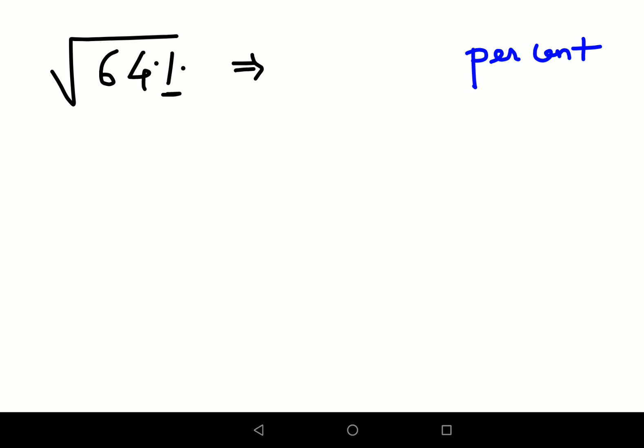So what we will do is we will write this 64% in its mathematical representation. So you can write 64 as it is. Now what does per mean? Per means division and cent means 100.